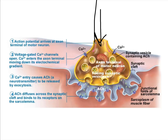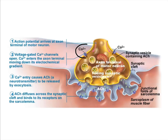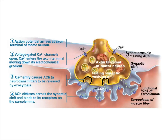So if this is the axon of our motor neuron, an action potential is coming down the membrane, and that triggers the opening of voltage-gated calcium channels. Calcium, which has built up outside the cell, can now flow into the cell once the channels open.